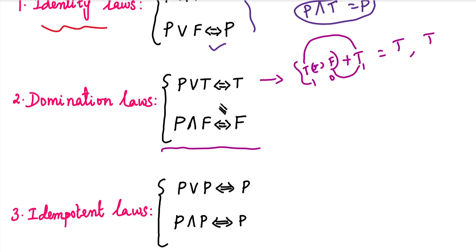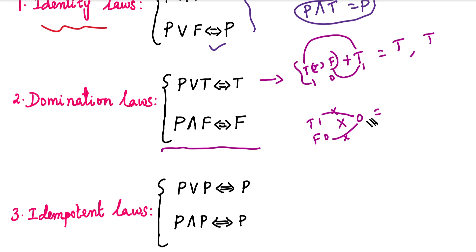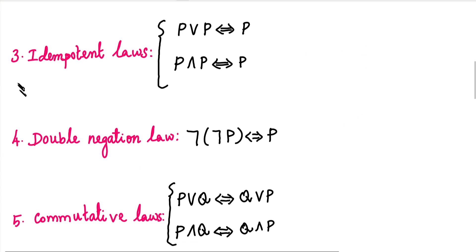For the second part of domination law: P is a statement that comes to either true or false — true is 1 and false is 0. The AND is a multiplication symbol, and false is 0. If you multiply any value by 0, the answer is 0, that is F. So P AND F is equivalent to F.